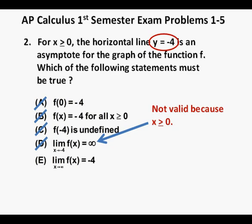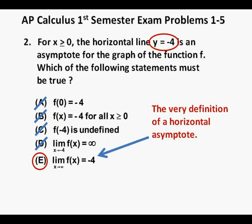That brings us to our last remaining available answer e. And this is the formal definition of a horizontal asymptote. The horizontal asymptote is the limit as x approaches infinity or negative infinity of the function. So we circle e as our correct answer.